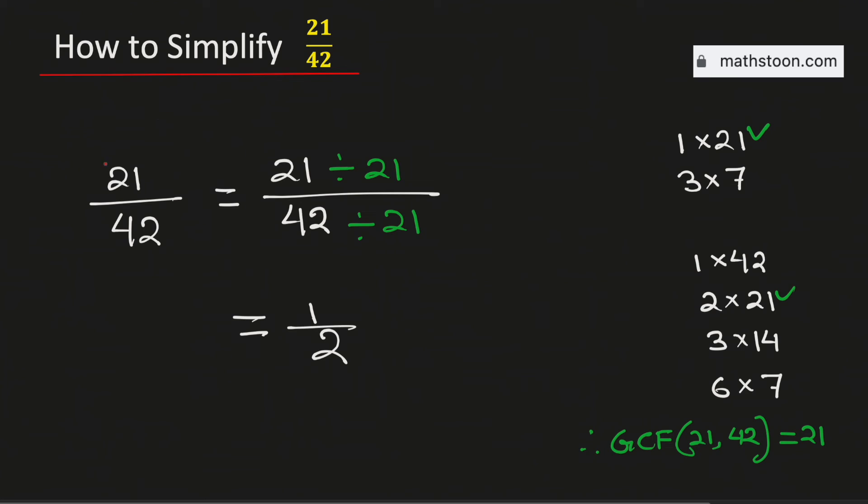Therefore we say that 21 over 42 simplified is equal to 1 over 2 and it is its lowest terms. And this is our final answer.